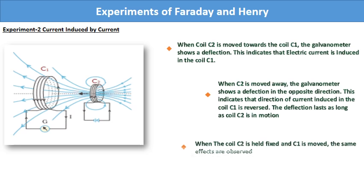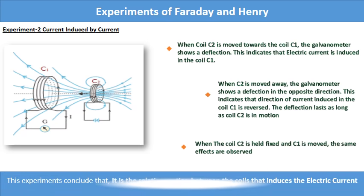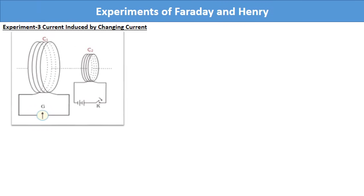When the coil C2 is held fixed and C1 is moved, the same effects are observed. This experiment concludes that, it is the relative motion between the coils that induces the electric current. Now, we will discuss about experiment 3: Current induced by changing current.